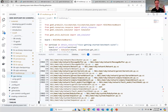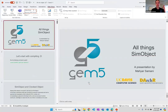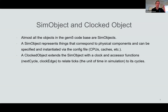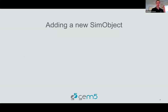So while GEM5 is building, let's talk about SimObjects. Almost all of the models in GEM5 — all the objects in the GEM5 codebase — are SimObjects. This is like our base class that we build on top of. A SimObject represents different models, so things like CPUs, caches, etc. There's also the idea of a ClockedObject, which is a type of SimObject. Most of our models are ClockedObjects because they have clocks, which is useful to get the next cycle or the clock edge in ticks.